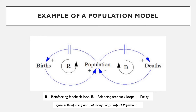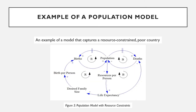Now we shall take a look at a model that captures a resource-constrained poor country. Figure 5 represents a population model with resource constraints. As population increases, the number of resources per person falls. And when this happens, the average life expectancy will also fall, since fewer resources mean less food, a weaker economy, fewer doctors, and fewer jobs. As life expectancy falls, the rate of deaths increases, which causes the population to fall. This balancing loop makes sense, but it will only come into play given that resource constraints are a serious issue.